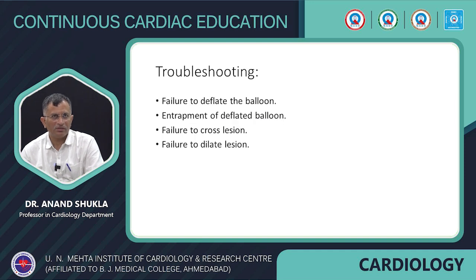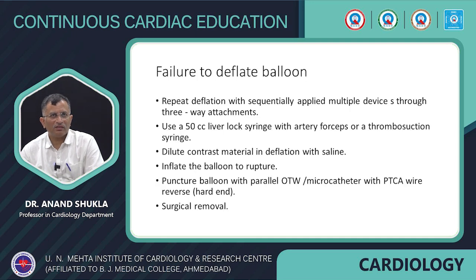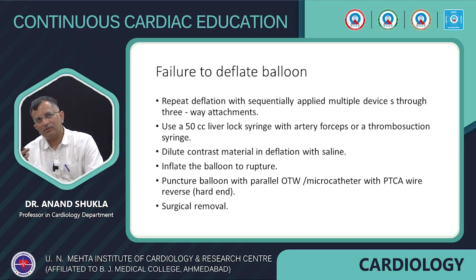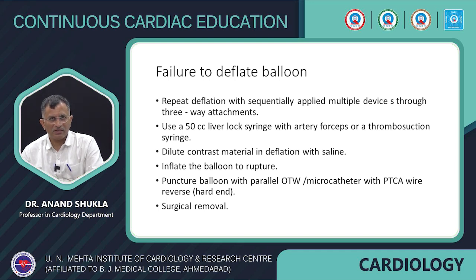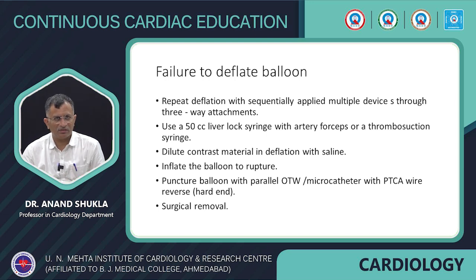Now the last part is troubleshooting. For failure to deflate the balloon, one can address it in three ways: use a sequential device and apply negative suction; take a 50 cc Luer-lock syringe and apply arterial forceps or thrombosuction syringe, as they have a larger negative capacity. Sometimes diluting the contrast with saline helps. Intentional balloon rupture is the last resort, as it can lead to barotrauma and vessel dissection. Alternatively, puncture the balloon with a parallel OTW catheter or microcatheter using the blunt end of a PTG or surgical needle.